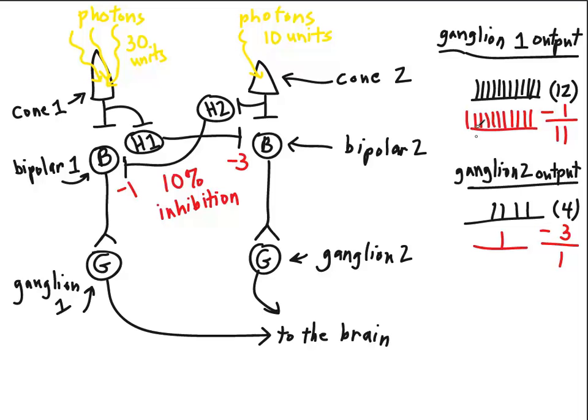Prior to the lateral inhibition, before we did anything with the horizontal cells, we saw that ganglion cell number 1 had an output of 12 action potentials per second, ganglion cell number 2 had the output of 4 action potentials per second. The difference between those two was 8 action potentials per second. We'll just abbreviate that as APS, that's not an official abbreviation, but that's what we'll use.